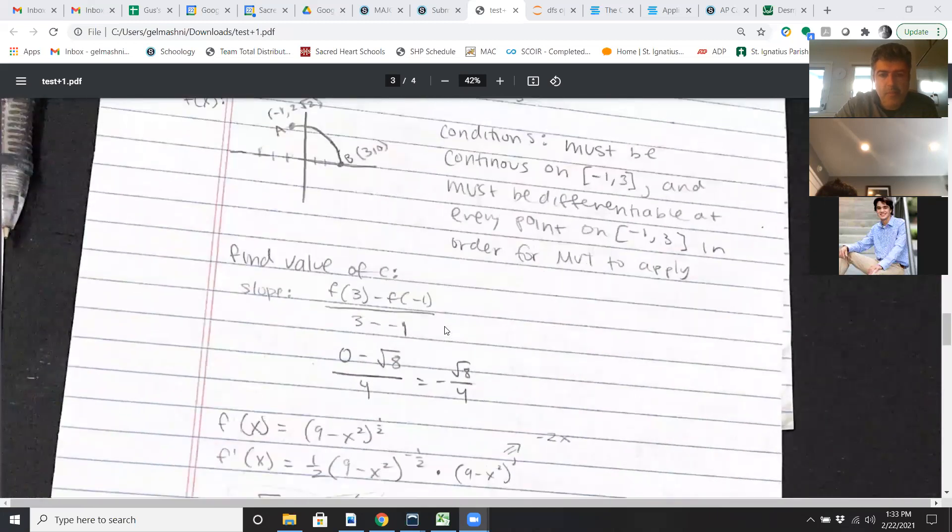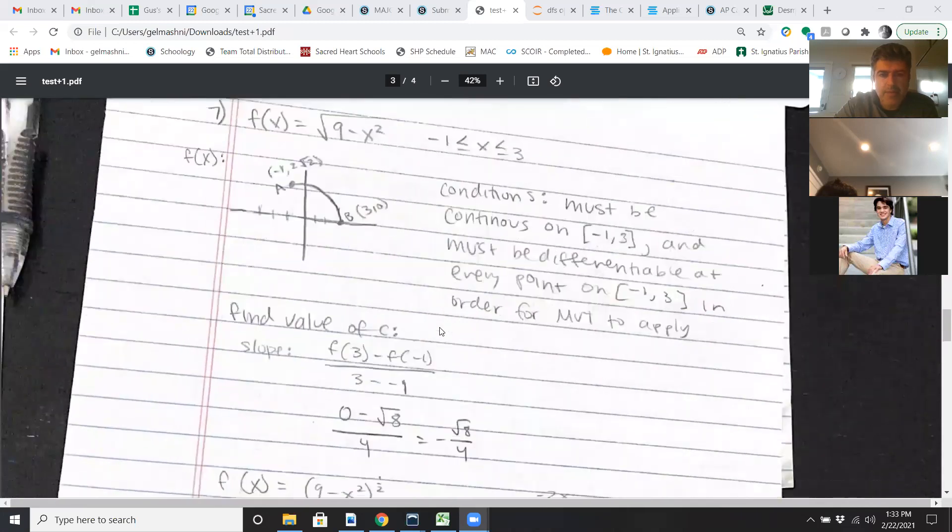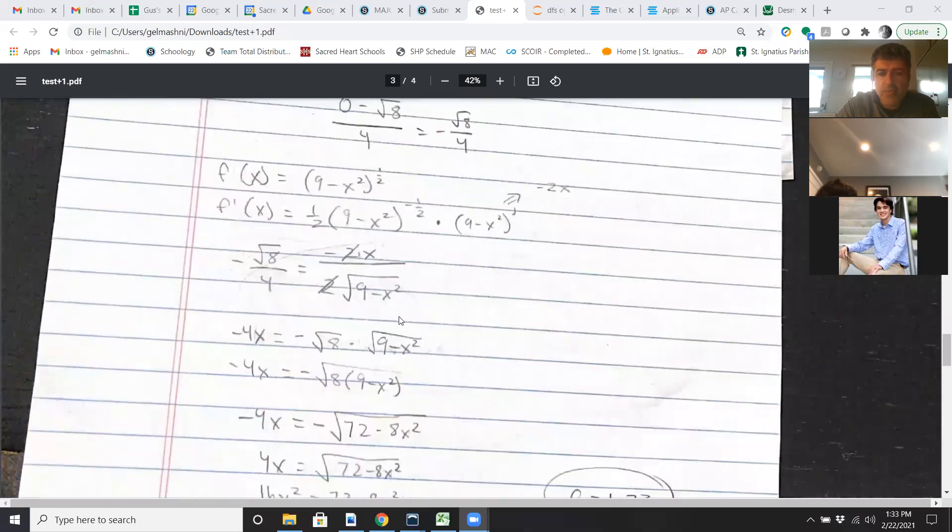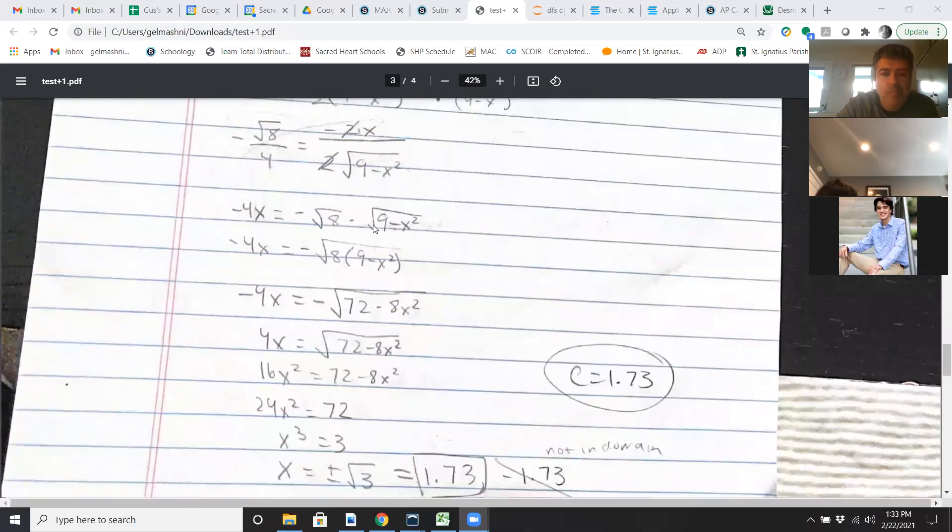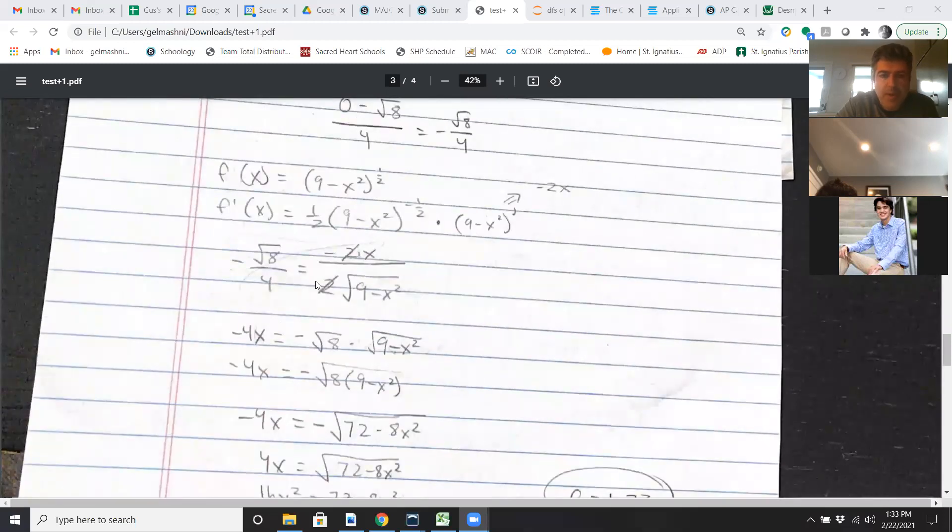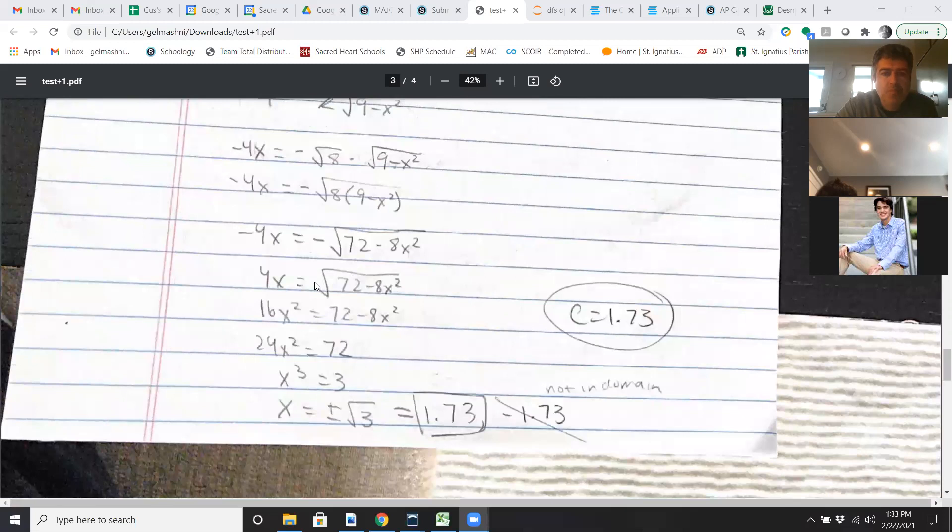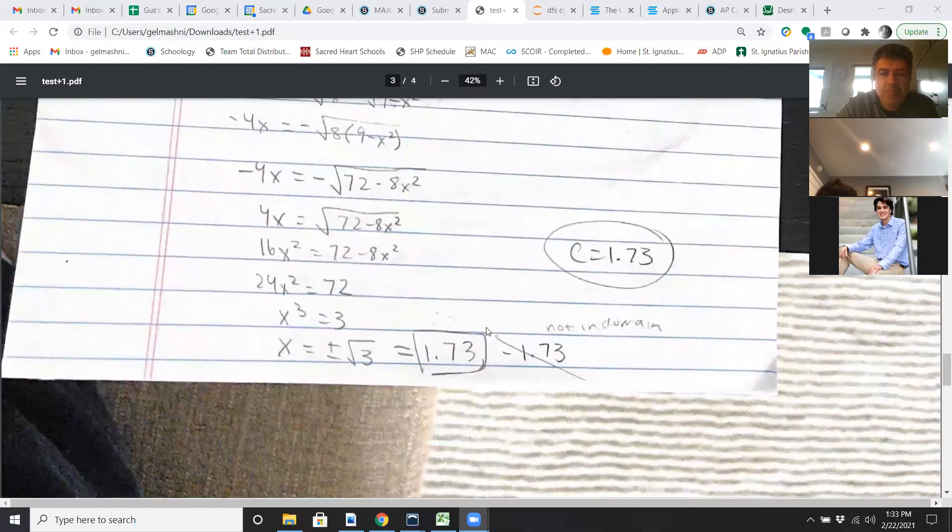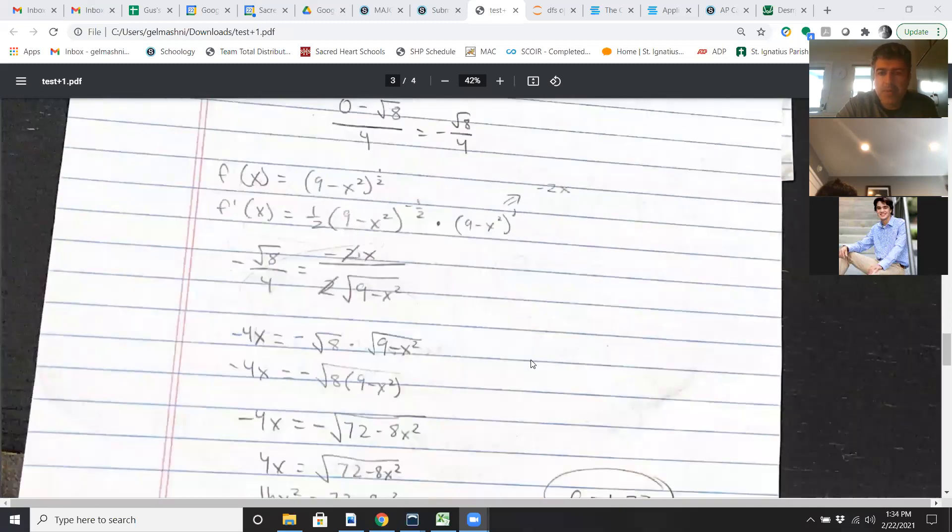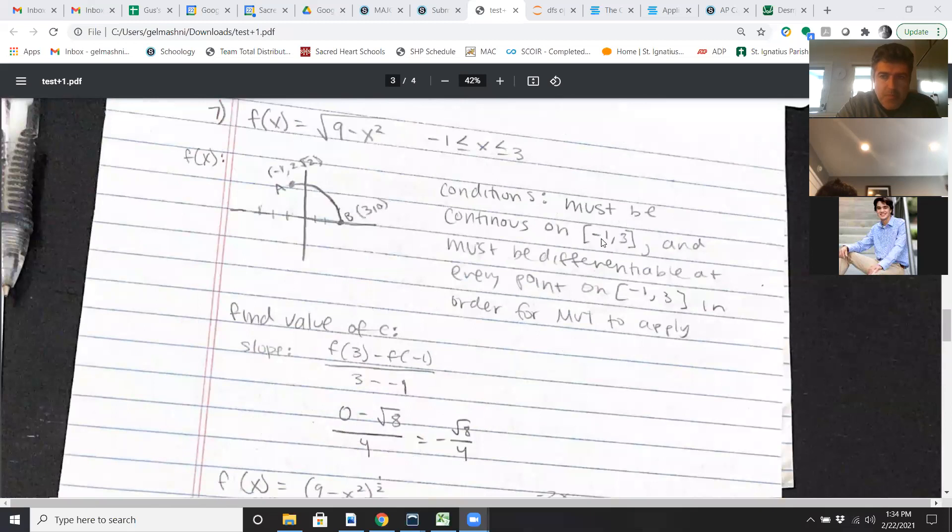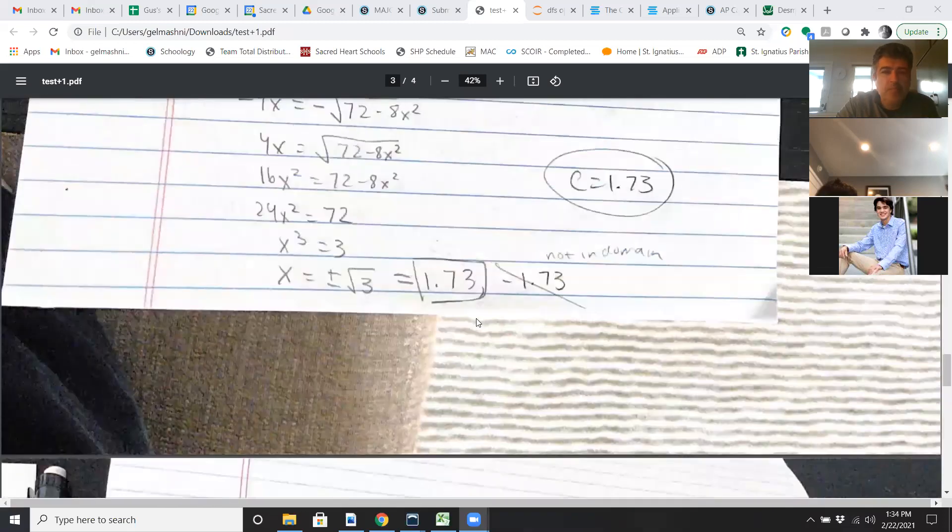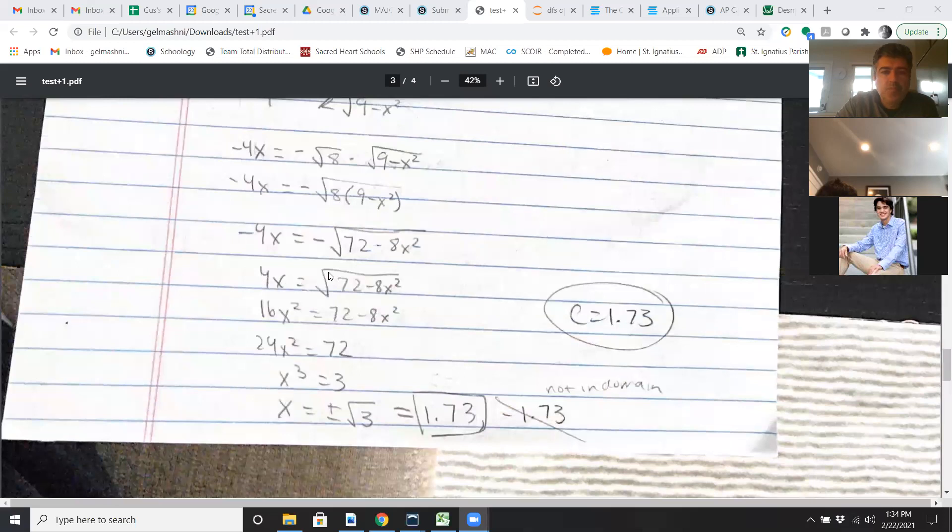Yeah, that looks correct to me. Yeah, it seems correct to me. And then you take the derivative, do that correctly. You got to do a chain rule. And drop the exponent by one. Then solve. You get two answers. And you discard the negative one. Because negative 1.73 is not in the interval. If you kept that there, it probably took up a point, I think.